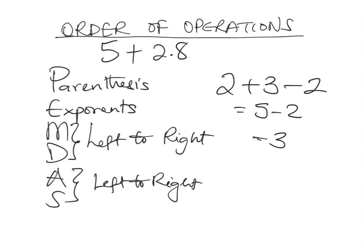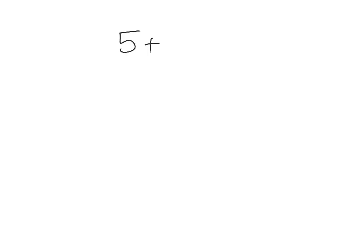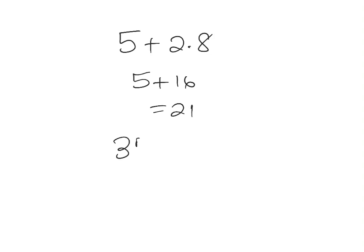Let's look at a few examples using PEMDAS from section 1.5 on order of operations. Example number two: five plus two times eight. According to PEMDAS, we do two times eight first because multiplication comes before addition. That gives us five plus sixteen, and the answer is twenty-one.